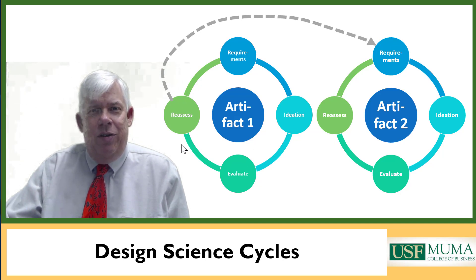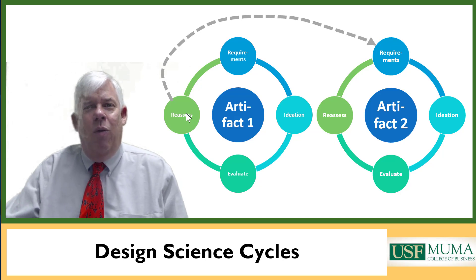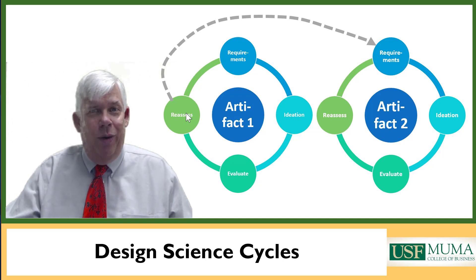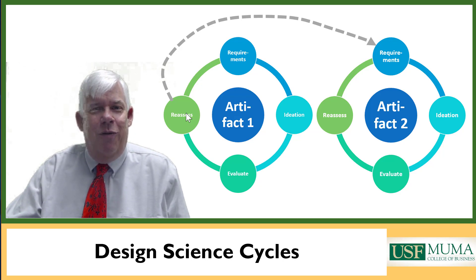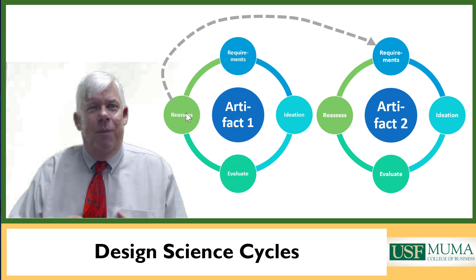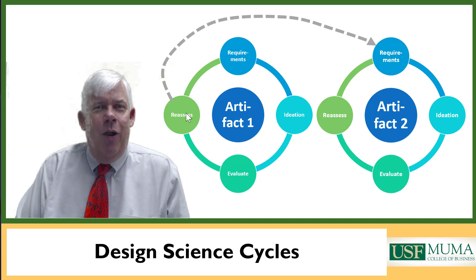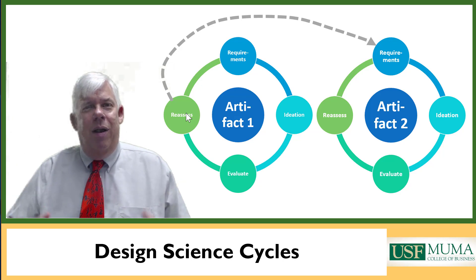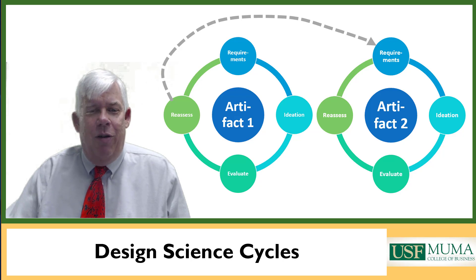So we might have an initial cycle where the goal is to create a set of requirements to design the new artifact, which might be an organization structure or a piece of software. Design science is extremely flexible in what constitutes an artifact, but it should be something that is physically expressed — whether a diagram, white paper, piece of software, or mechanical device. You need to be specific about the artifact.